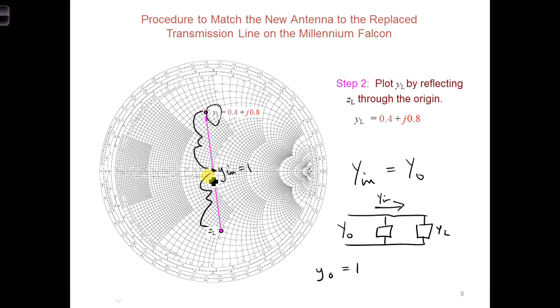So now let's consider different scenarios. What if we just add an inductor or capacitor right at the load? So not some distance down the load, but right at the load. Could we get this y_L to the center of the Smith chart?